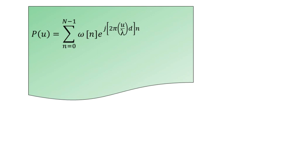The function P(u) can be considered as the discrete-time Fourier transform of w(n), with frequency pairing given by 2π·u·d/λ. The weight function w(n) as a function of element position is called the aperture function. For a uniformly excited array, w(n) is equal to a constant. Grating lobes in the radiation pattern are avoided if d ≤ λ/2. At the typical value d = λ/2, the range of u is between −π and π.